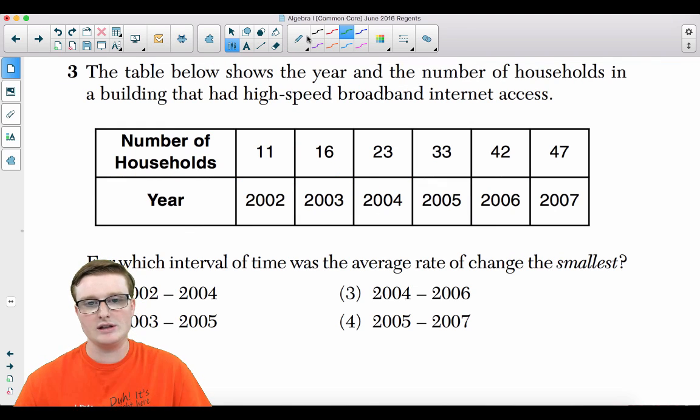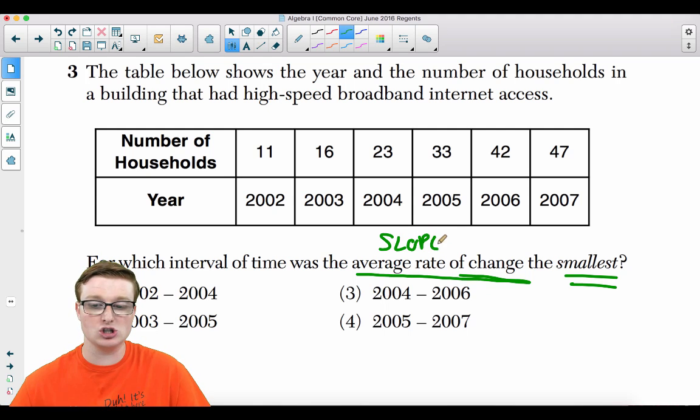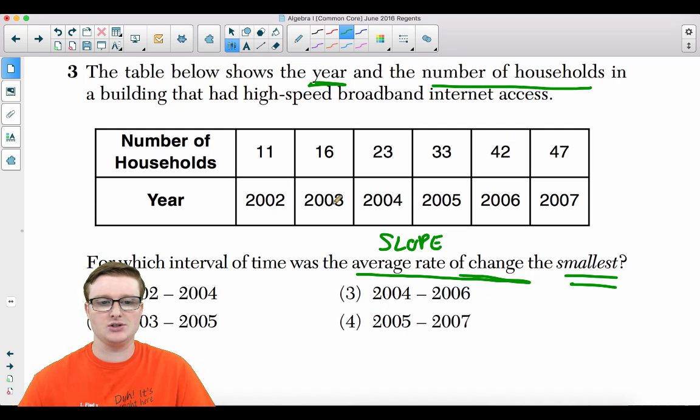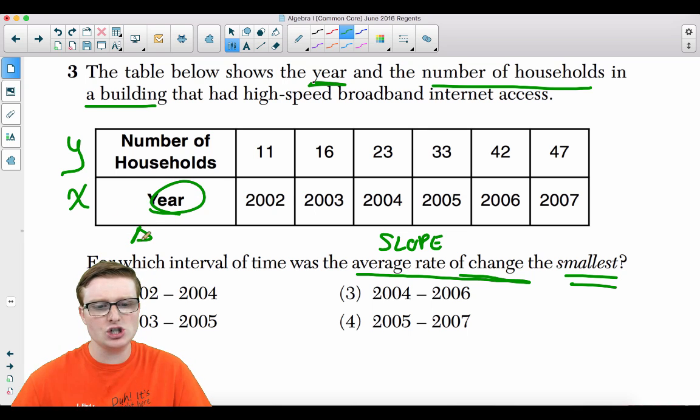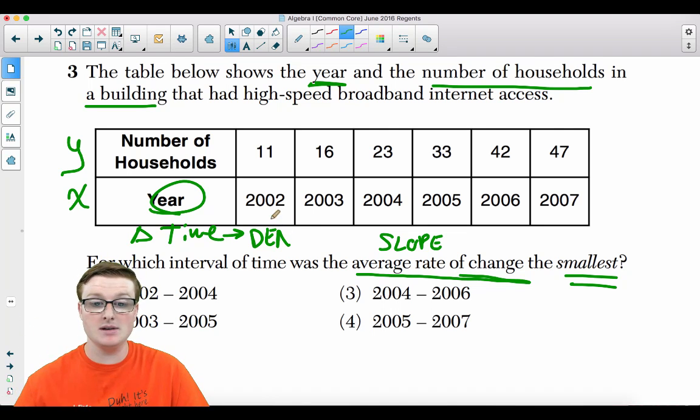Number three, the table below shows the year and the number of households in a building that had high speed broadband internet access. For which interval of time was the average rate of change the smallest? By now you should know that average rate of change means slope. And we're looking for the slope that is the smallest. Now, this is what made this question so difficult. Your years are your X values. Your number of households are your Y values. The change in time always belongs in the denominator all the time.